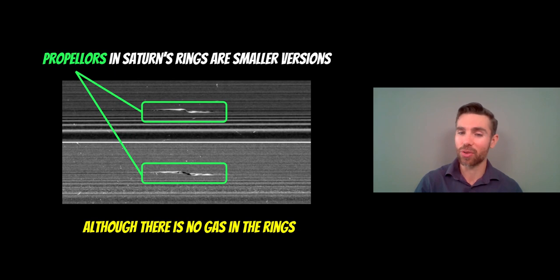There's no gas in Saturn's rings, but what you find is that you get a similar sort of effect. So when they're small enough, it's almost like Type 1.